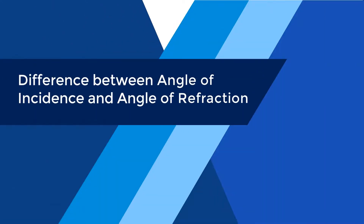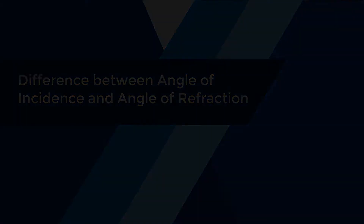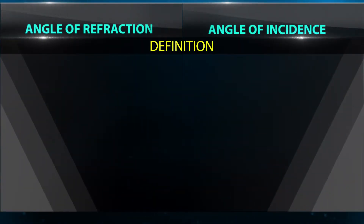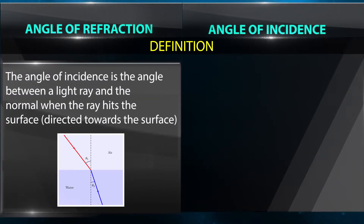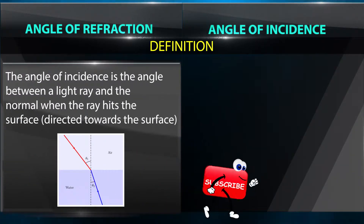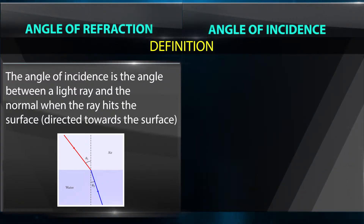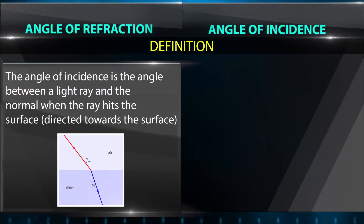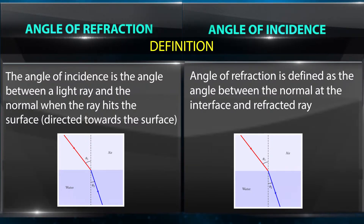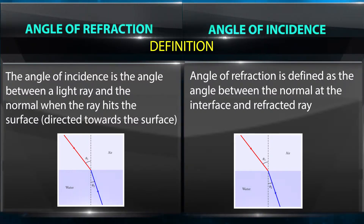The difference between angle of incidence and angle of refraction: the angle of incidence is the angle between the light ray and the normal when the ray hits the surface, directed towards the surface. The angle of refraction is defined as the angle between the normal at the interface and the refracted ray.